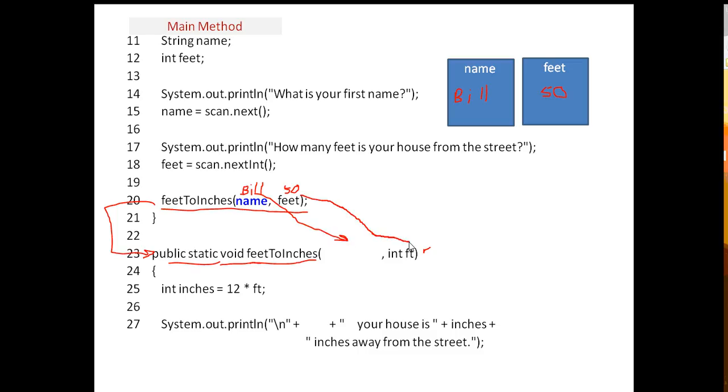Now the important thing is here, the only thing that you have to make sure you get right is that this has to be in order. So if name comes first, and then feet, then you need a variable here to catch the name here. So we're going to use the variable called nm.